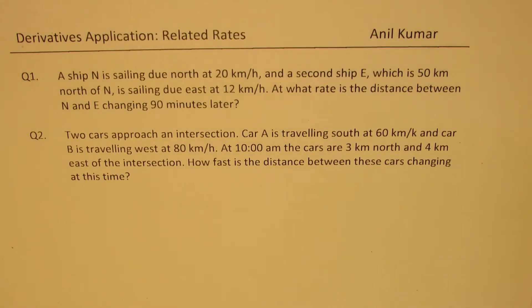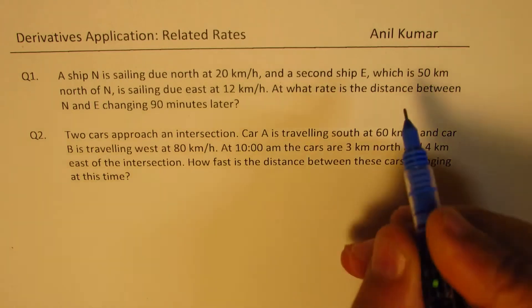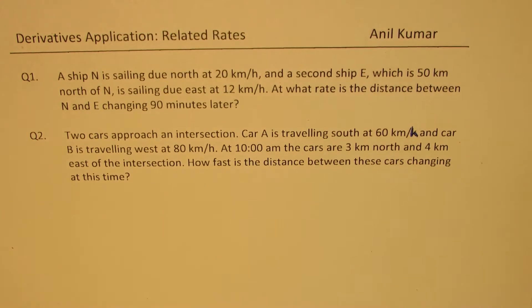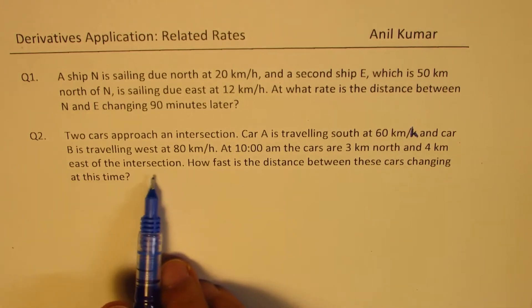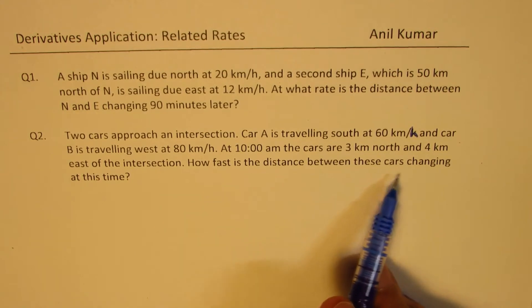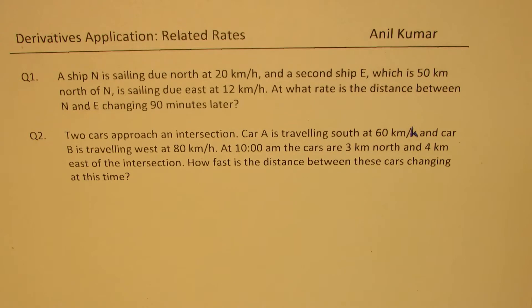Question one: ship N is sailing due north at 20 kilometers per hour, and a second ship E, which is 50 kilometers north of N, is sailing due east at 12 kilometers per hour. At what rate is the distance between N and E changing 90 minutes later? Question two: two cars approach an intersection. Car A is traveling south at 60 kilometers per hour and car B is traveling west at 80 kilometers per hour. At 10 a.m., the cars are 3 kilometers north and 4 kilometers east of the intersection. How fast is the distance between these cars changing at this time?